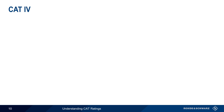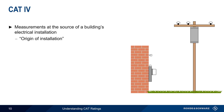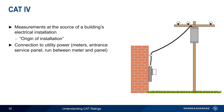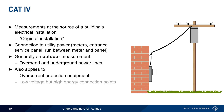The highest category is CAT 4, which applies to measurements made at the source of a building's electrical installation. This is sometimes called the origin of installation, because it involves the connection between the utility power and the meter, the entrance service panel, as well as the run between the meter and the distribution panel. CAT 4 is generally an outdoor measurement, and applies to both overhead and underground power lines. It also applies in some special cases, such as for overcurrent protection equipment, or for connection points that are low voltage but high energy.